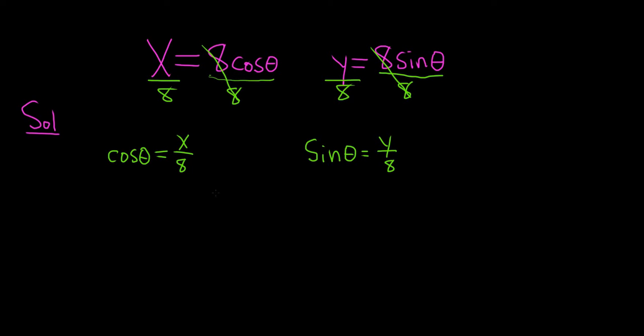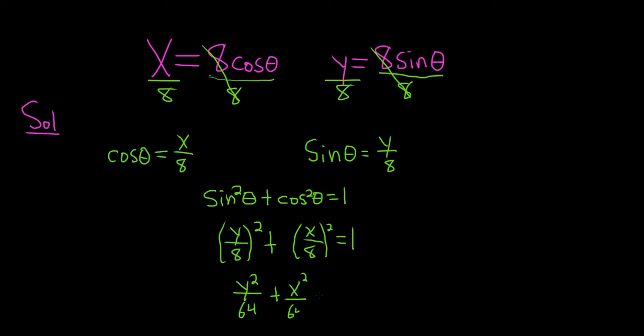Now we use a familiar identity. Recall that sine squared theta plus cosine squared theta is equal to 1. So sine is y over 8, so that's going to give us y over 8 squared plus cosine is x over 8, so that'll be x over 8 squared. That's equal to 1. So that gives us y squared over 64 plus x squared over 64, and that's equal to 1.